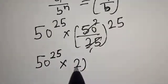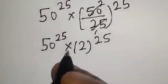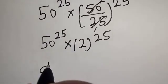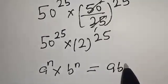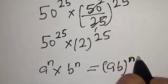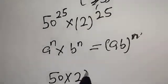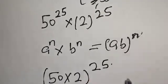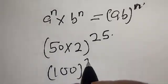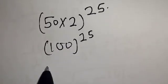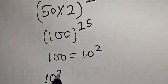We also have 50 raised to power 25 multiplied by 2 raised to power 25. Now if you have a raised to the power n multiplied by b raised to the power n, this is equal to a times b, raised to the power n. So we have 50 multiplied by 2, raised to power 25, and 50 multiplied by 2 is 100, raised to power 25.